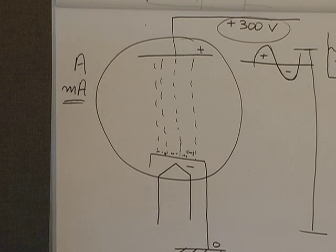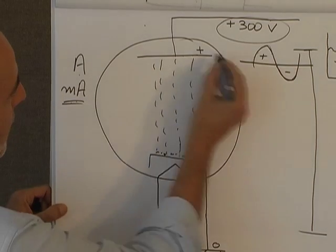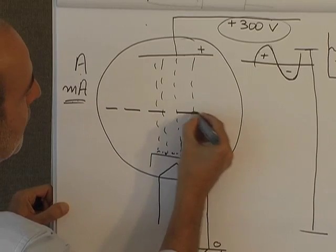The element that we're going to add is placed between the cathode and the anode and it is called the grid.